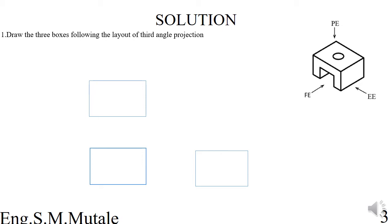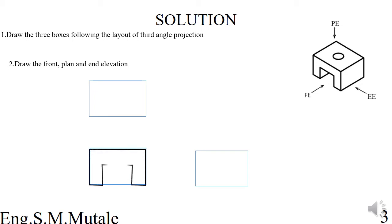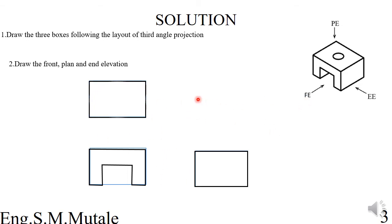Step two is to draw the front, plan, and end elevation. If you view this 3D object from the front, you would see something like this. When you view it from the end elevation you see something like this, and when you view it from the plan elevation you would see something like that.